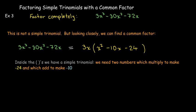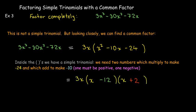For the simple trinomial in parentheses, I need to find two numbers which multiply to make negative 24 and add to make negative 10. One has to be positive and one negative, because their product is negative 24. The numbers that work are negative 12 and positive 2 — that multiplies to make negative 24, and when added together gives negative 10, which is what I wanted.